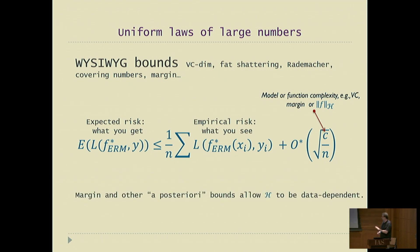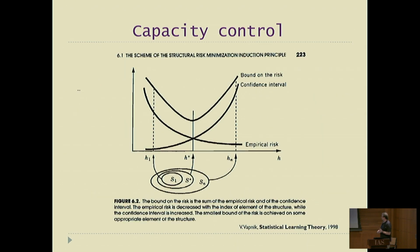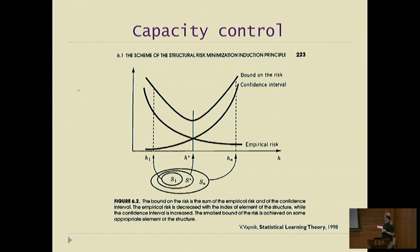Margin and other posterior bounds are of the same form, but they allow H, the space of functions, to be data dependent — for example, you can consider functions which have some margin. Capacity control is choosing H so that C can be traded off with empirical loss. As you increase the capacity of the space, your empirical loss goes down while the bound capacity term goes up. The total bound first goes down and then up again — it's a U-shaped curve — and the optimal hypothesis is at the bottom of that U.